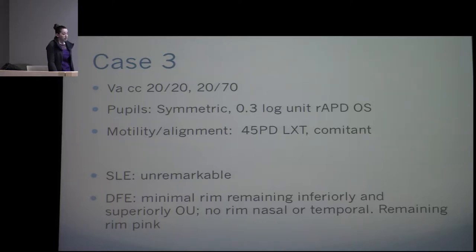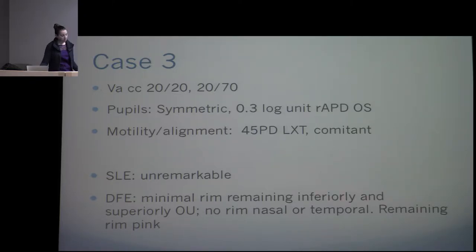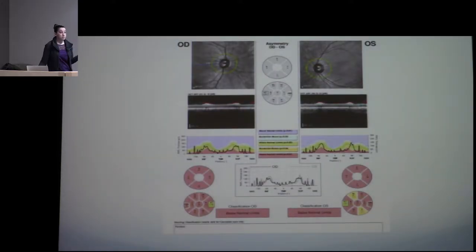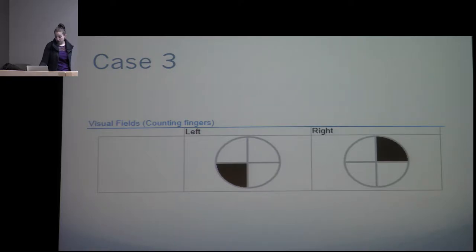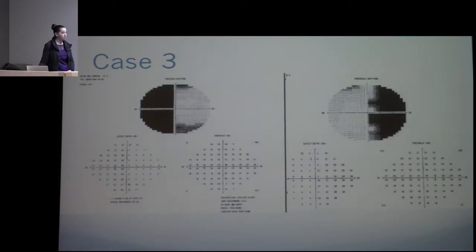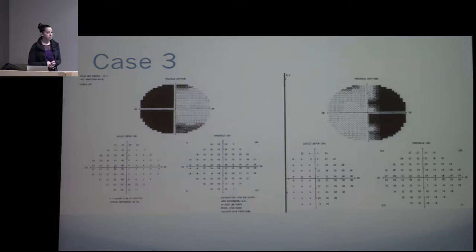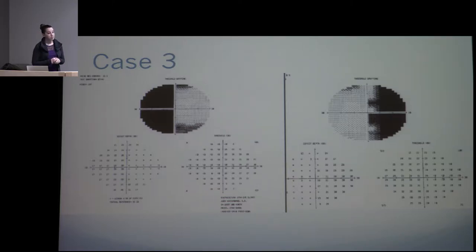Her anterior segment was unremarkable. On optic nerve exam she had a little rim remaining pink superiorly and inferiorly on the left, with no rim temporally or nasally — it was very thin. Her confrontational field showed a bitemporal field defect. The Humphrey visual field confirmed this. So the lesion would be somewhere near the chiasm. The MRI was done specifically to evaluate a bitemporal field defect and was read as normal — no pituitary tumor found.